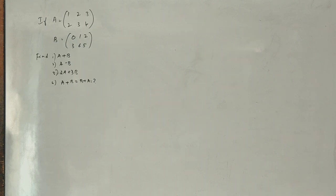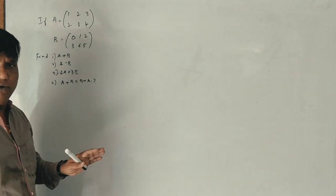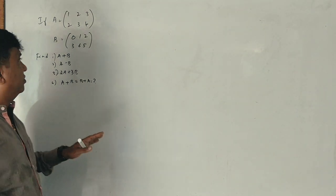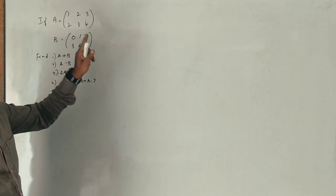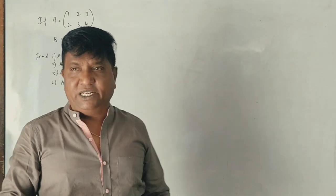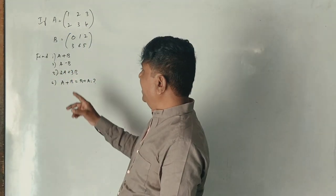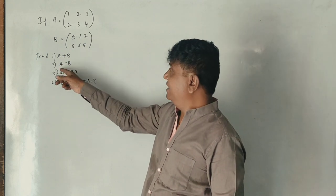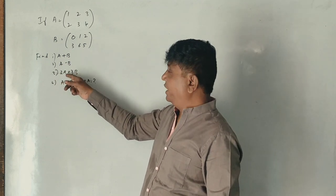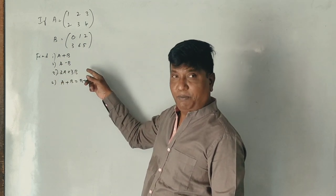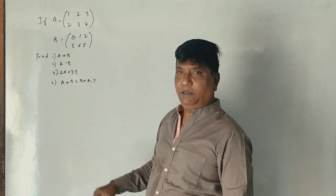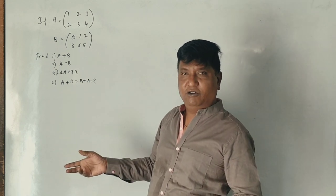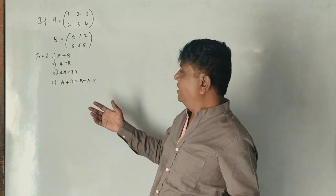Now in 2017, this is the 7-mark question. So what is the model? First, matrix A and matrix B. In this case, find A plus B, A minus B, 2A plus 3B, and prove that A plus B is equal to B plus A. This is how to prove it.